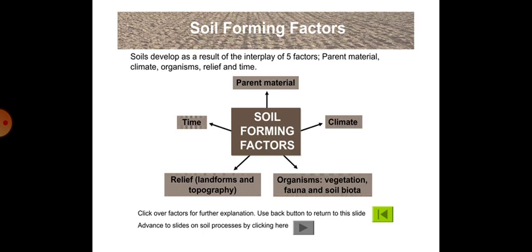There are some soil forming factors. Soils develop as a result of the interplay of five factors: parent material, climate, organisms, relief, and time. These are all the soil forming factors.